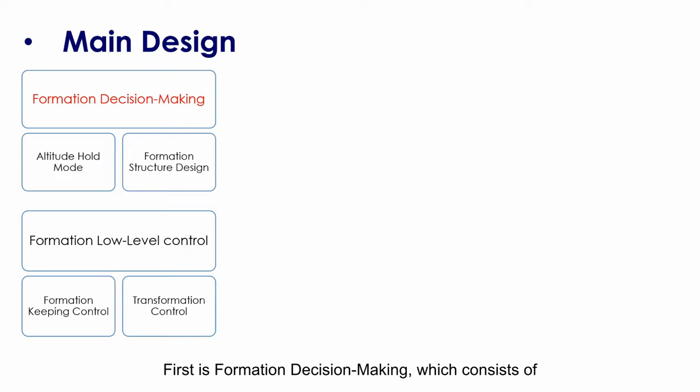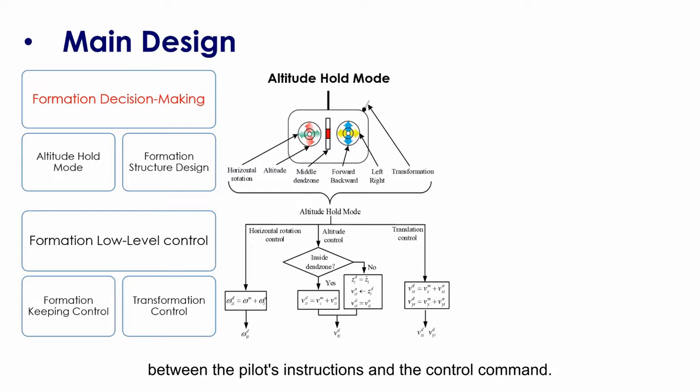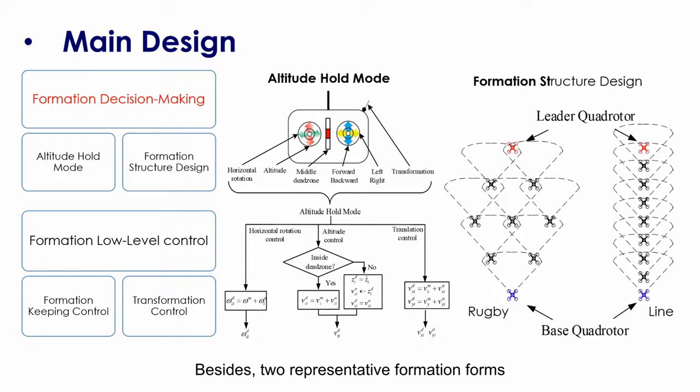First is formation decision-making, which consists of altitude hold mode and formation structure design. Altitude hold mode proposes the relationship between the pilot's instructions and the control command. Besides, two representative formation forms suitable for different environments are designed. They are rugby and line.